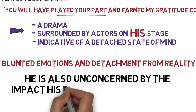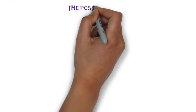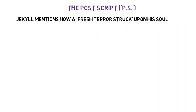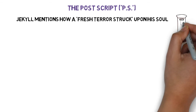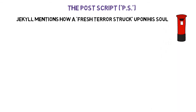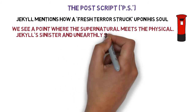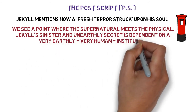Jekyll is also unconcerned by the impact that his behaviour has on others. If we look to his postscript — the PS on the letter — he mentions how 'a fresh terror struck upon his soul.' It occurs to him that the post office may fail him and the letter will arrive late. We must remind ourselves that electronic communication was not widespread, so Jekyll's dependence on delivery of the letter was very real. Here, with his confession to this fresh terror, we see a point where the supernatural meets the physical — Jekyll's sinister and unearthly secret is dependent on a very earthly, a very human institution.